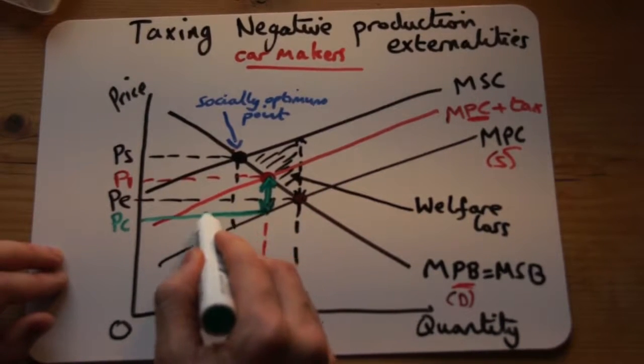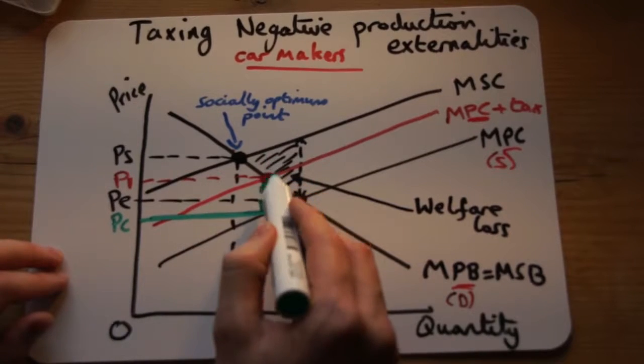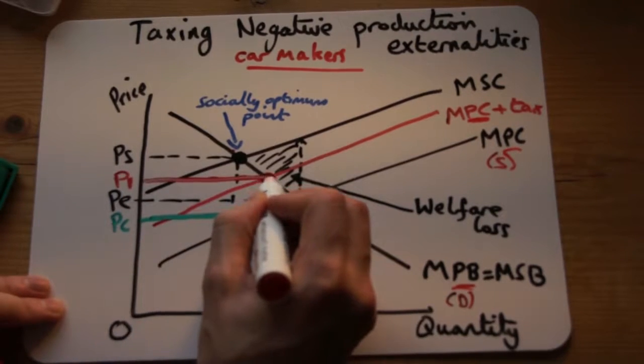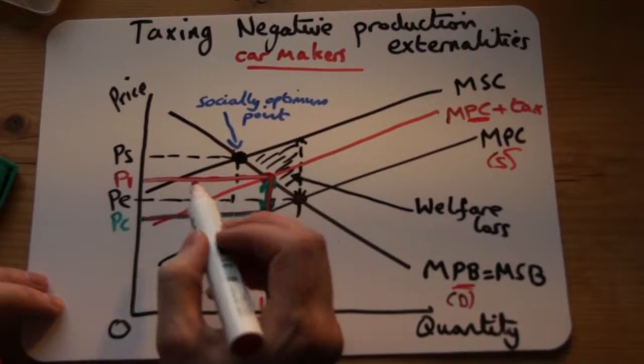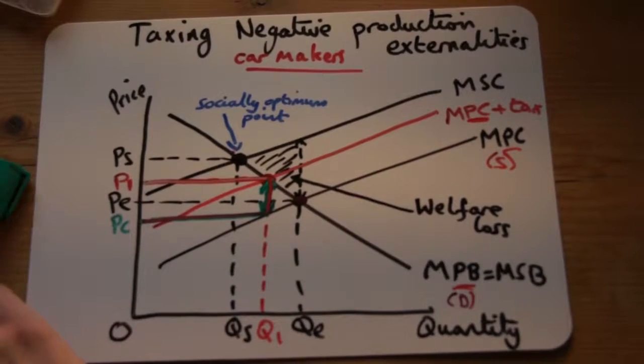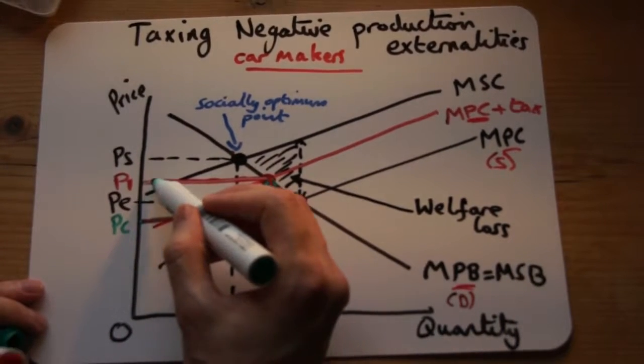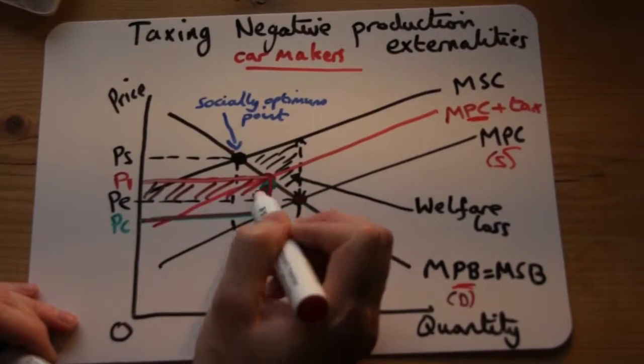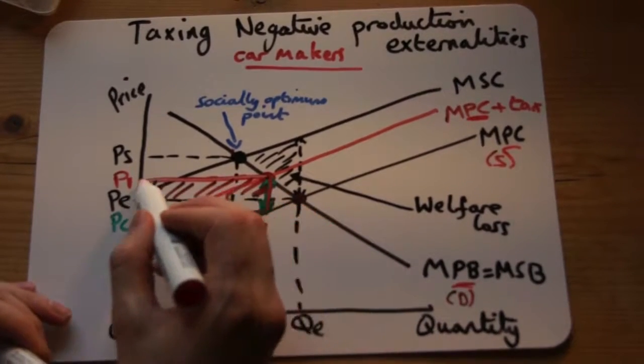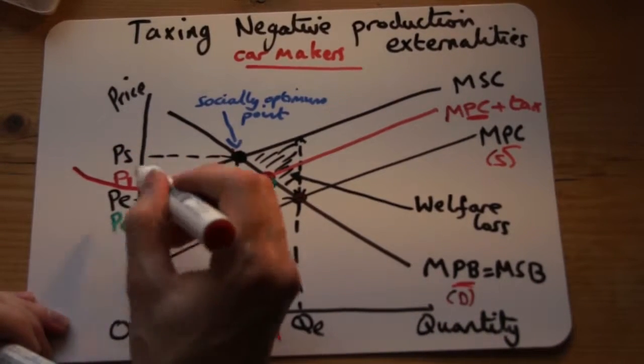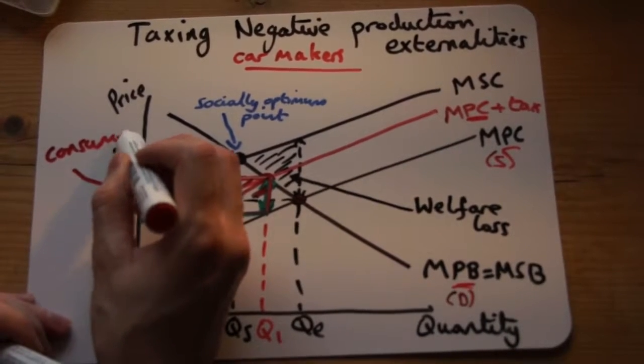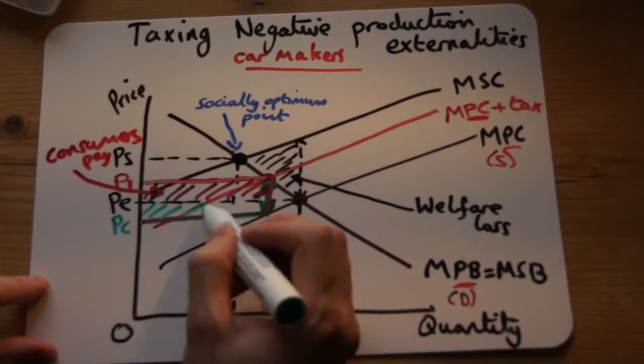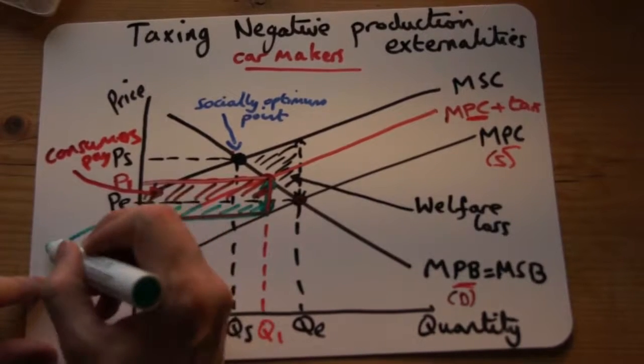Then you simply go across the price axis and say they are paying from the new equilibrium, they're paying this down here and they're paying this whole amount. But it's crucial to remember that the consumers are paying the price difference. The consumers are paying the price difference from the old equilibrium line to the new equilibrium. So the consumers pay this, and the producers pay the rest.